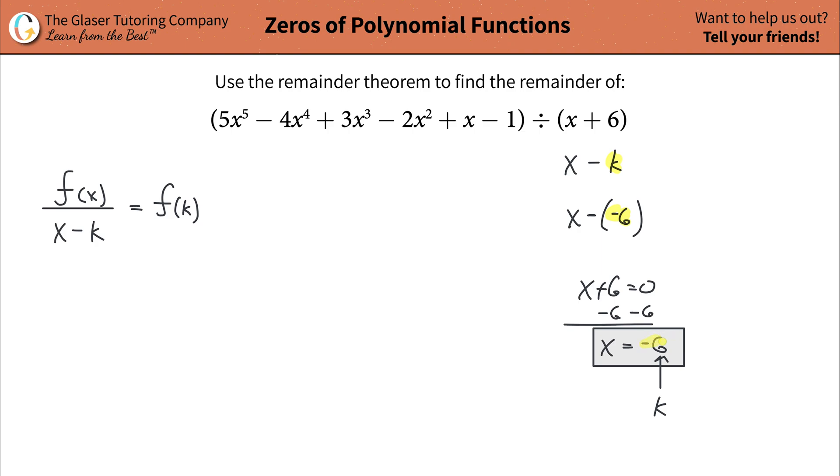So now that we found our k value, it's negative 6. What this is saying to us is that the remainder of this division is going to be equal to the function's value evaluated at k.